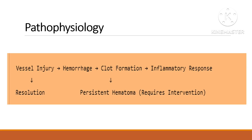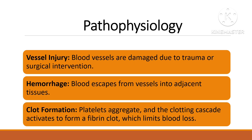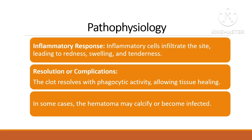Regarding the pathophysiology of hematomas, a hematoma begins when a blood vessel — artery, vein, or capillary — ruptures due to trauma, pressure, or disease. Once damaged, blood leaks into surrounding tissues forming a pool outside the vessel. The body responds by initiating the clotting cascade; platelets adhere to the injury site, forming a clot and helping to seal the vessel.